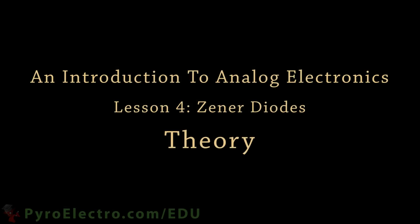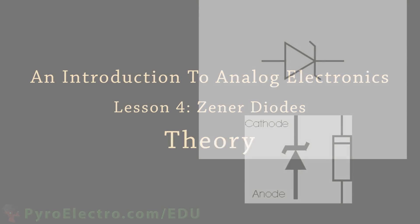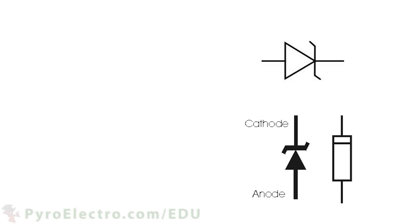The Zener diode has a circuit symbol that looks like this, with angled lines unlike the normal diode circuit symbol. Functionally, a Zener diode works the same way as a normal diode, allowing current through in one direction. However, electrical current at certain voltages can also flow in the reverse direction in a Zener diode.